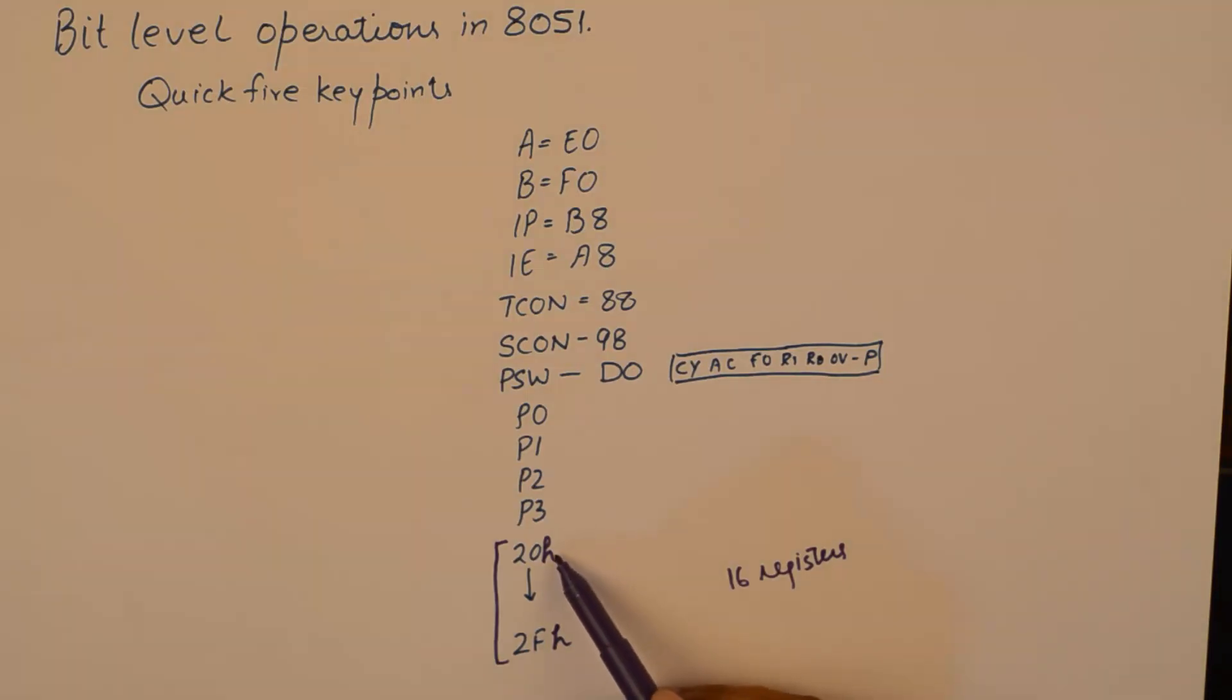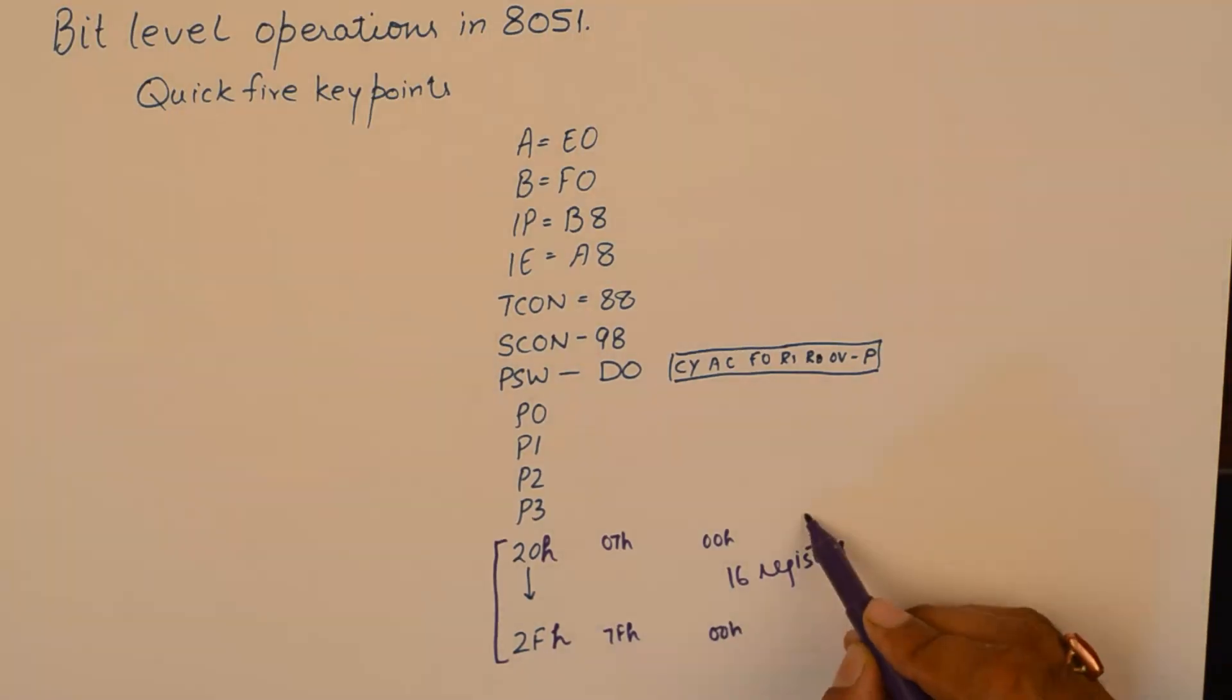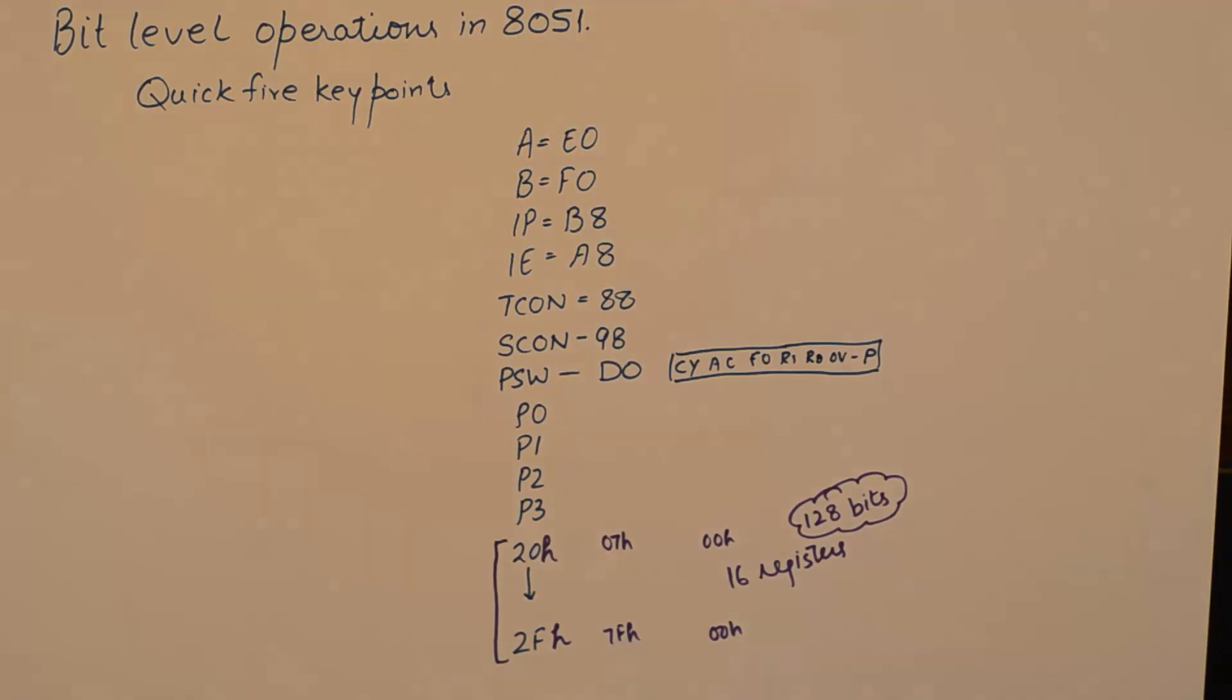Now the addresses of the bits in these 16 registers start from 00H in the first register. So every bit is assigned a specific address and it goes up to 7FH. So all in all there are 128 bits in this area which can be made 1 or 0 or it can be complemented individually.